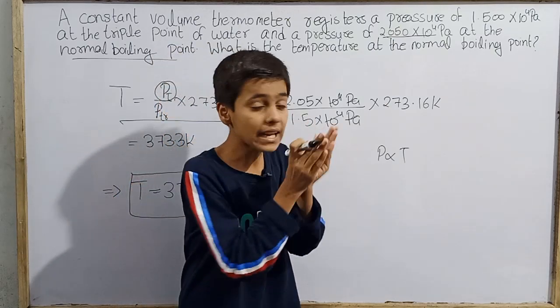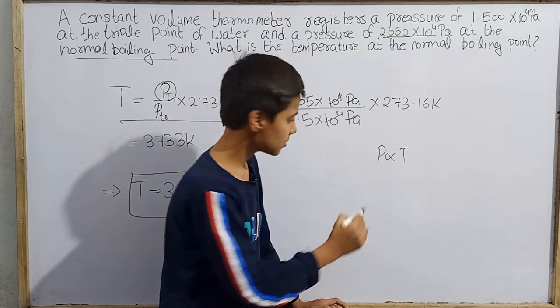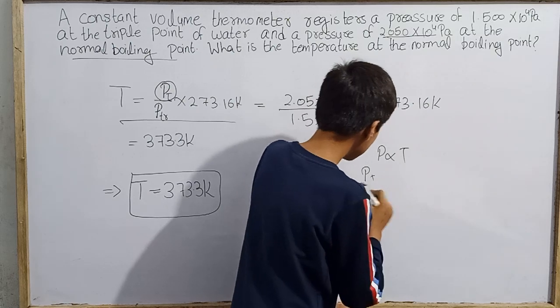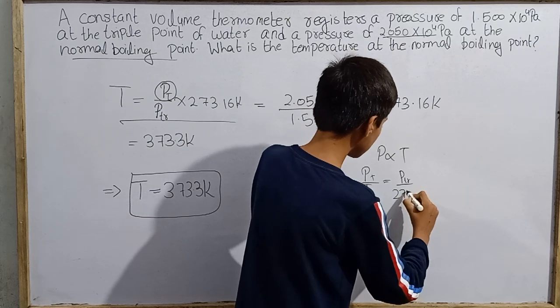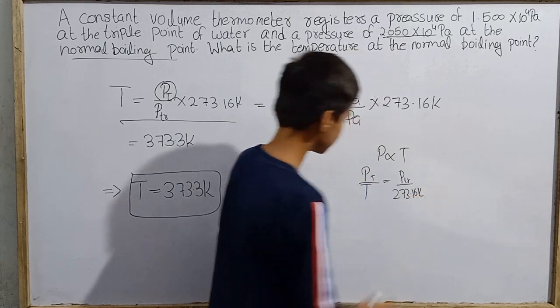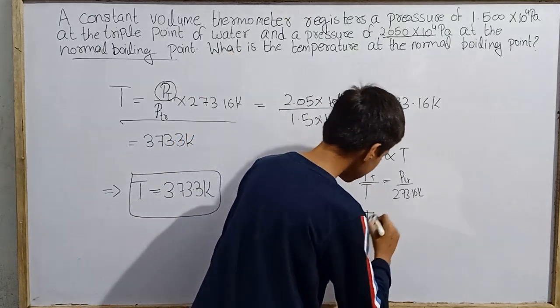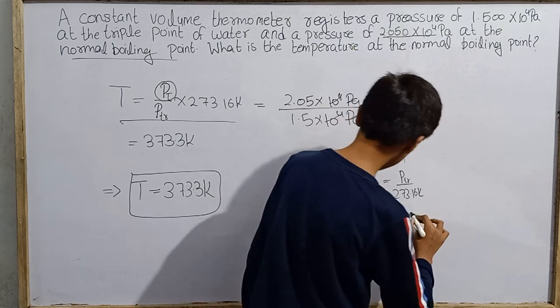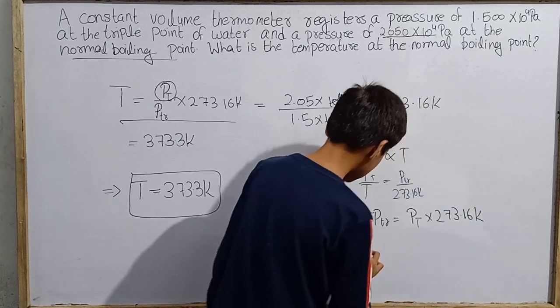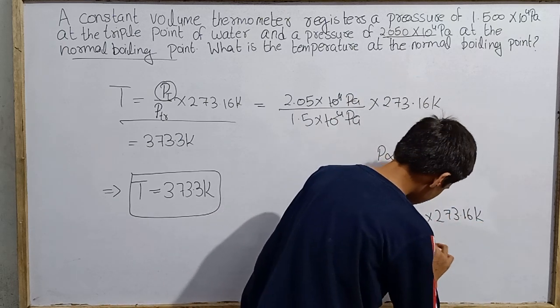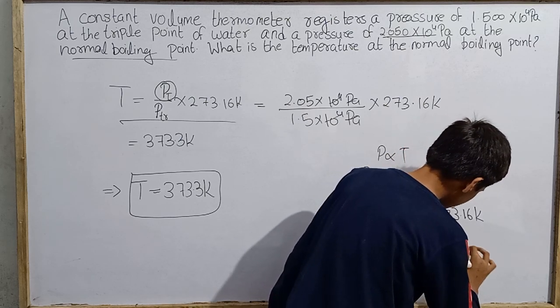So P by T will be constant. If P by T is constant, then for every value of P by T, their ratio will be constant. So for all values, pressure at temperature T by T equals pressure at triple point by temperature at triple point, 273.16 Kelvin. And here on cross multiplication, you can get that T into PTR equals P at T into 273.16 Kelvin.